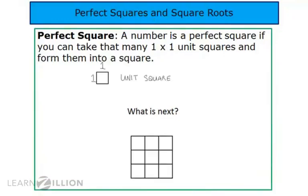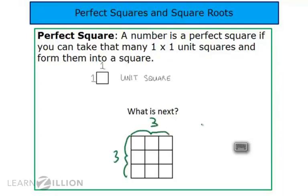If you said nine, you are correct, because I can take nine one-by-one unit squares and form them into a three-by-three square. Therefore, the square root of nine is three.